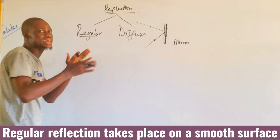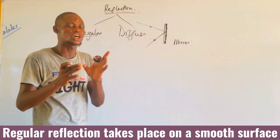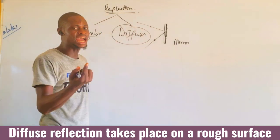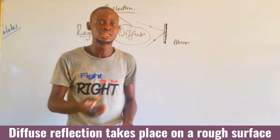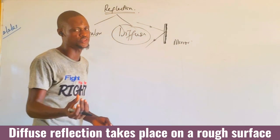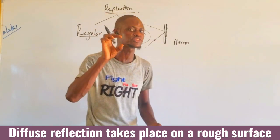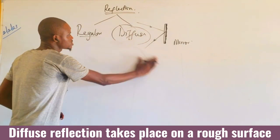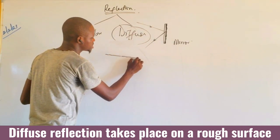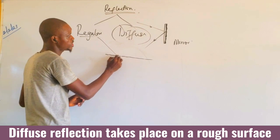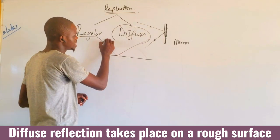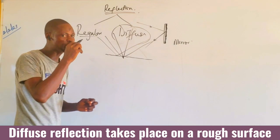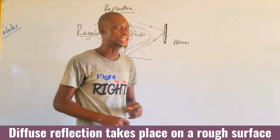Diffuse reflection is a kind of reflection that takes place on a rough surface. On this kind of surface, the reflection takes place with rays reflecting in different directions at different angles.